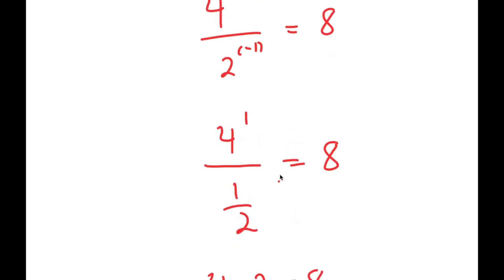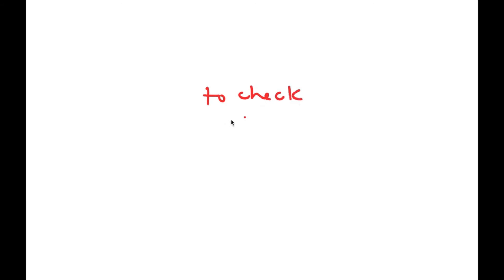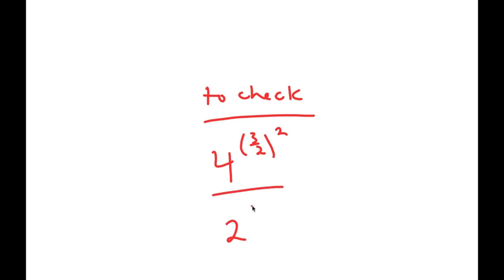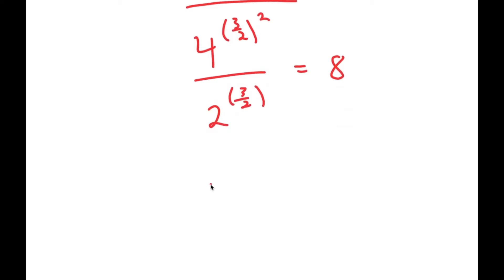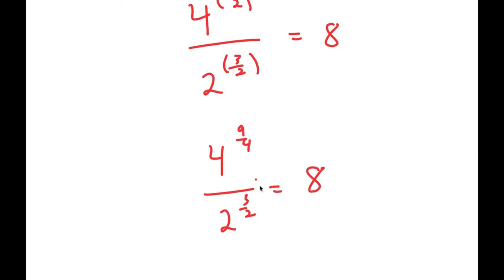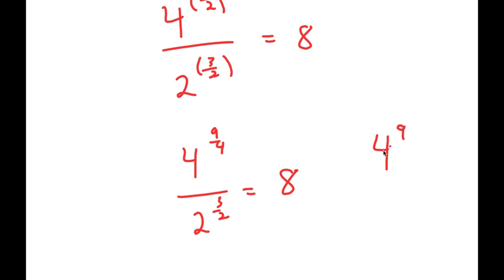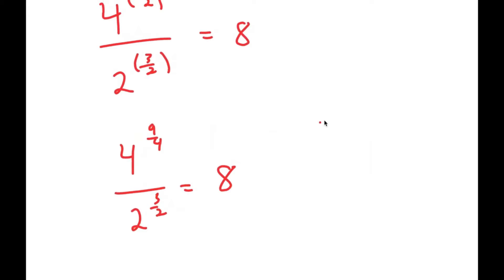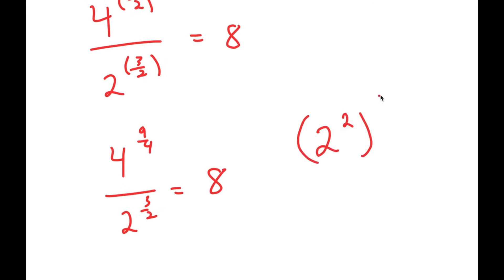Now I'll check x equals 3 over 2. I have 4 to the power of 3 over 2 squared over 2 to the power of 3 over 2 equals 8. Since 3 over 2 squared is 9 over 4, I have 4 to the power of 9 over 4 over 2 to the power of 3 over 2 equals 8. I'll rewrite this as 2 squared to the power of 9 over 4 over 2 to the power of 3 over 2.